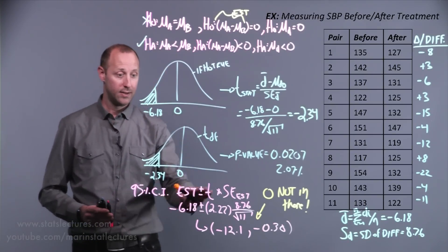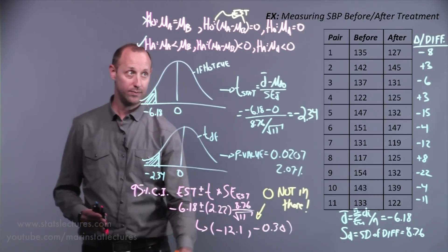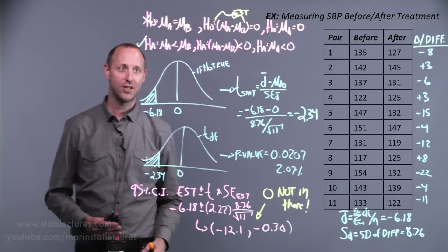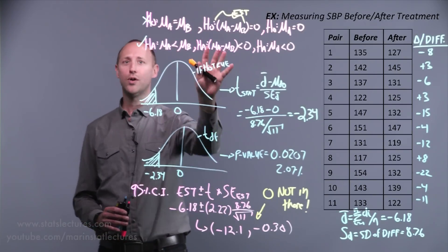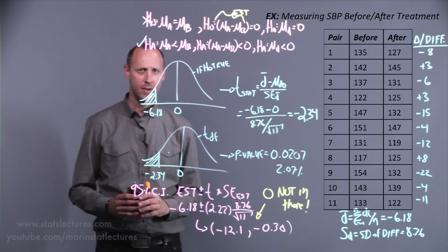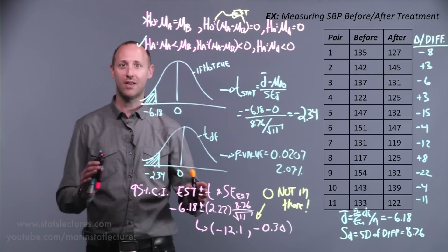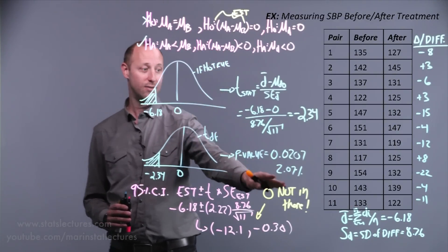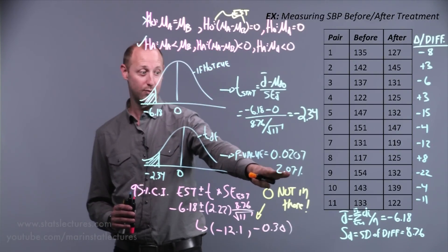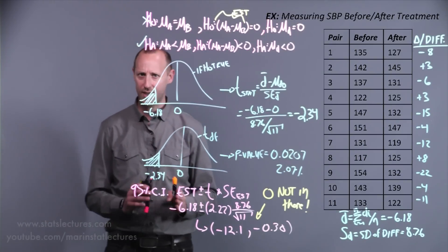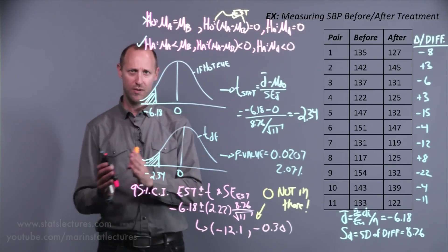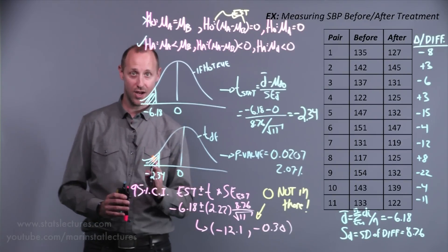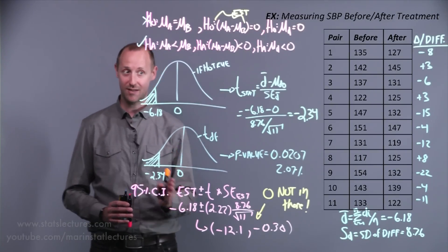Statistical significance versus clinical or scientific significance are slightly different concepts. It's also worth noting: here we did a two-sided confidence interval, but a one-sided hypothesis test. For perfect alignment, we should either do a one-sided confidence interval or a two-sided test. The two-sided p-value would double to about 4.14%. We also don't want to get too stuck on whether a p-value is 4% vs. 6% for a reject or fail-to-reject decision — the p-value is a guide, not a magic number.